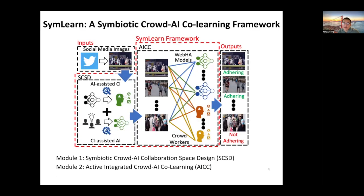In this paper, we propose SyMLearn, a symbiotic human-AI co-learning framework that explores the complex interdependence between AI and crowdsourced human intelligence. We focus on crowdsourced human intelligence because it provides a flexible option to collect human intelligence at reasonable costs.